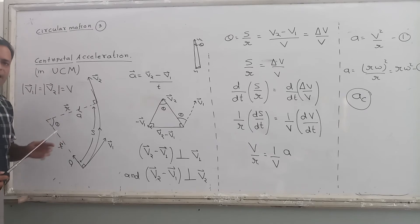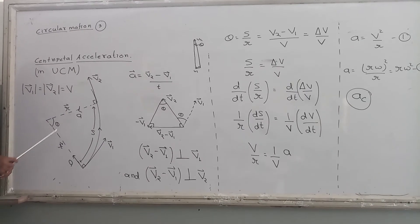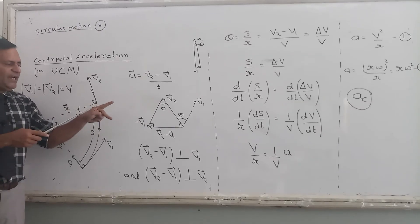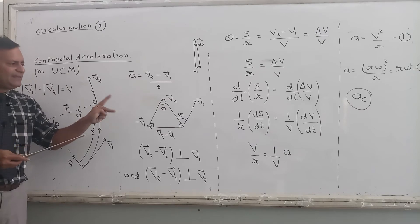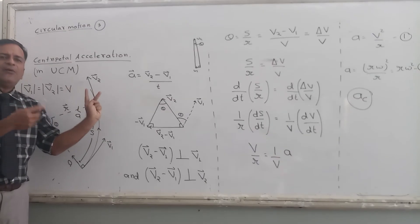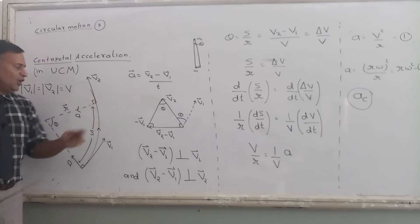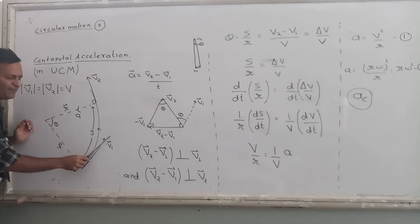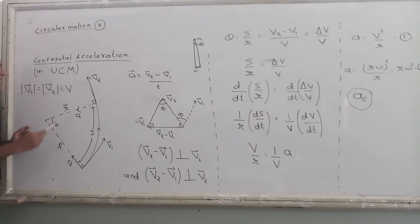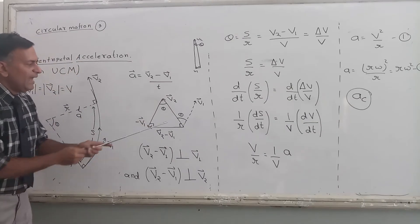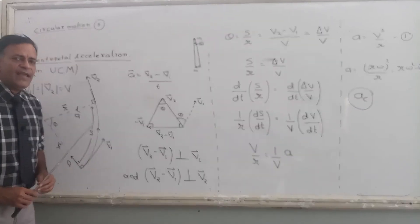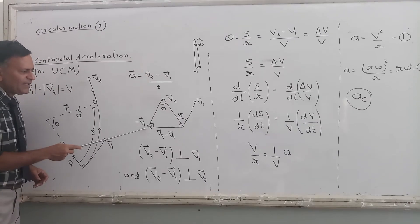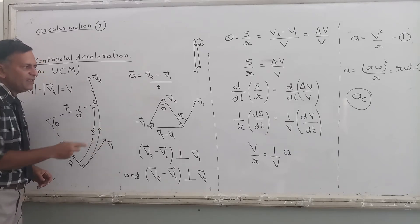Think of it this way: the angle between these two radii is theta. Now if I turn both fingers by 90 degrees, the angle between my fingers is still theta. So the angle between v1 and v2 is also theta. But here the angle is between v2 and minus v1, so I have drawn minus v1. You can see this as an alternate angle — if this is theta, this is also theta.